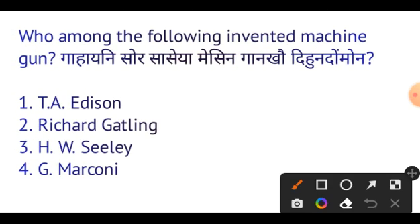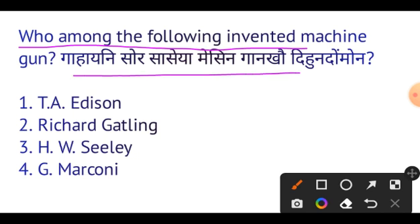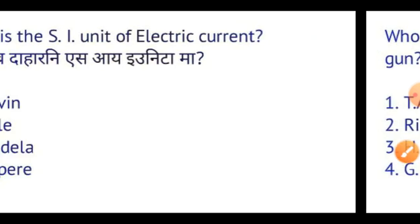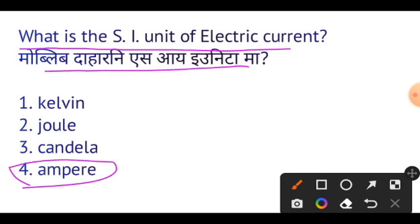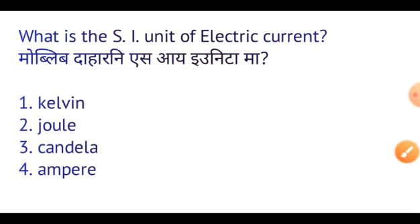Next question: Who among the following invented the machine gun? Richard Gatling invented the machine gun — very important. Next question: What is the SI unit of electric current? The SI unit of electric current is Ampere. This is important.